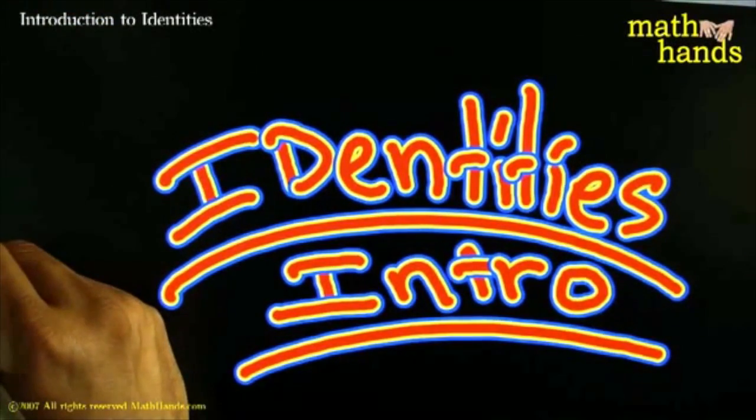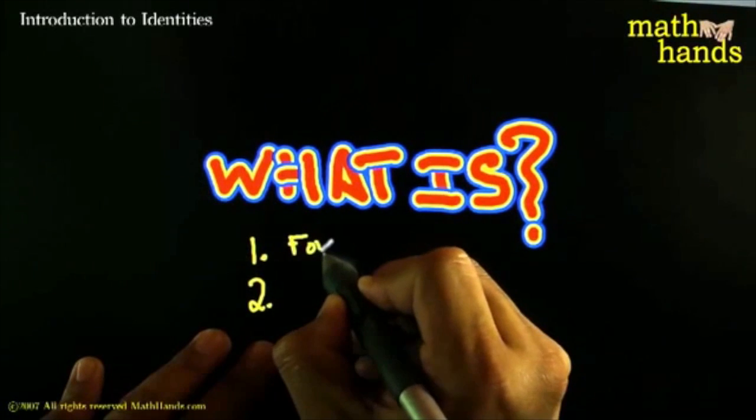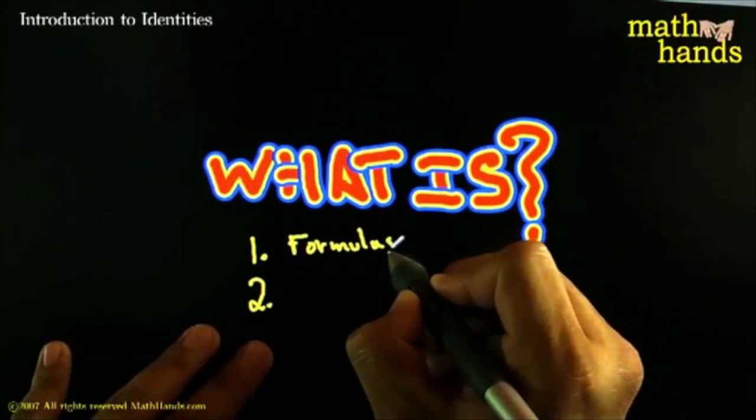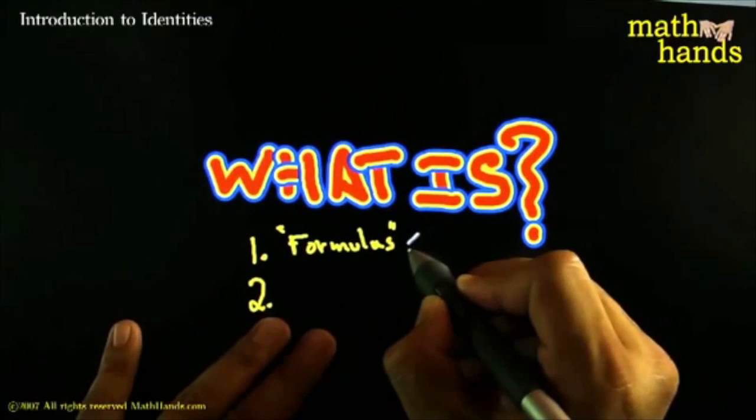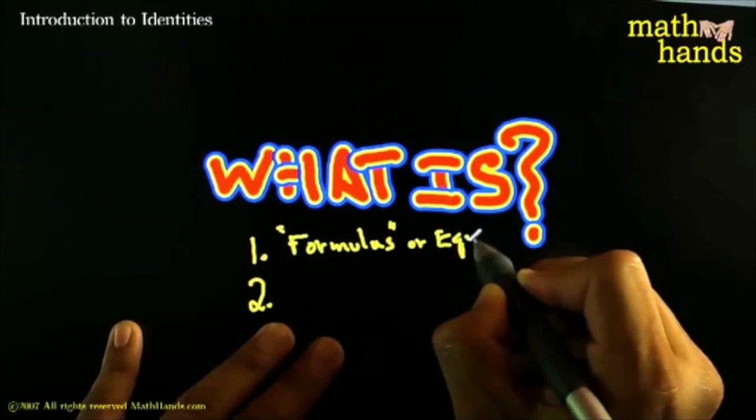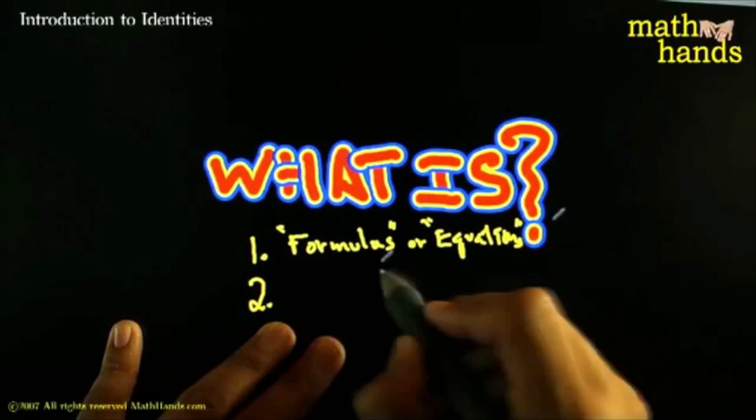And so with that being said, we've got to address the question here. What exactly are identities? And so one way to see what identities are, they are formulas. They are formulas. In some sense, formulas that contain equalities. So in some sense, you could say maybe you could call them equations.